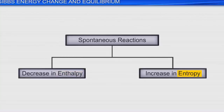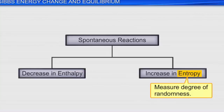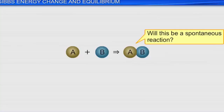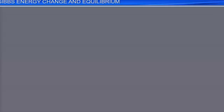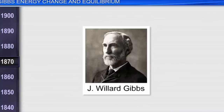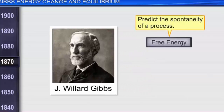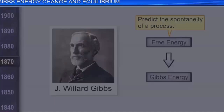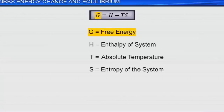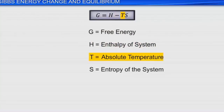We've learned that entropy helps us measure the degree of randomness or disorder. But is there a way to predict if a process is going to be spontaneous? In the 1870s, J. Willard Gibbs, an American mathematical physicist, developed the concept of free energy to predict the spontaneity of a process. Today, the term free energy is called Gibbs energy, represented as G, and is calculated as G = H – TS, where H is the enthalpy of the system, T is the absolute temperature, and S is the entropy of the system.